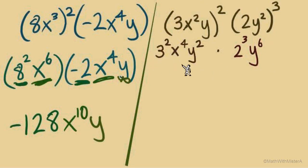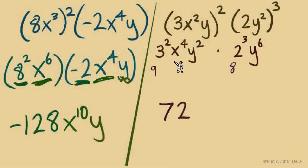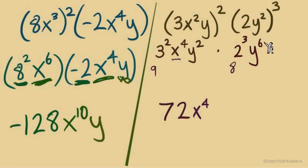No more exponents outside of parentheses, so we can drop those parentheses. Let's multiply the numbers: 3 squared is 9, and 2 to the third is 8 — careful, that's 2 times 2 times 2, which is 8, not 6. Multiplying 9 times 8 gives us 72, our coefficient. For the variables: x to the fourth appears only once, so just bring it down. For the y's, we have y to the second and y to the sixth, and since it's multiplication, we add the exponents: y to the eighth. Our final answer is 72x to the fourth y to the eighth.